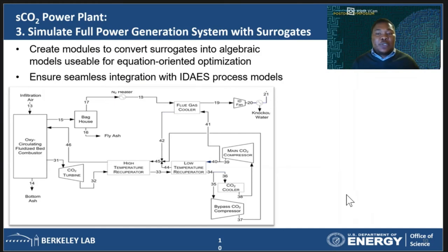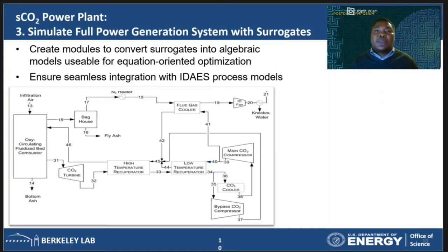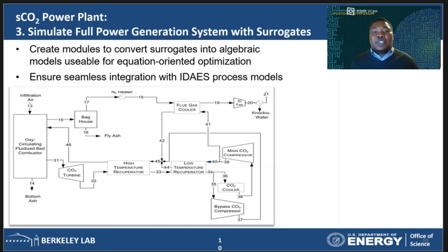What the surrogate thermodynamic package allows us to do is simulate the entire flowsheet. The figure here shows what the full power plant flowsheet with the turbine looks like — the surrogate supplies the properties required for all the streams present in this process. For this to work, we had to go from the surrogate to an algebraic model usable for equation-oriented optimization in IDES. We had to convert the surrogates from simple data structures and Python objects into algebraic equations that could be used by the algebraic modeling language, that is PyOMO. We addressed this by developing surrogate-to-PyOMO translation modules that take in the variables as defined by PyOMO, create an algebraic expression of the surrogate, and return a result translatable by PyOMO. Because IDES itself is built on top of PyOMO, converting the surrogates into PyOMO expressions meant seamless and automatic integration into the IDES framework.